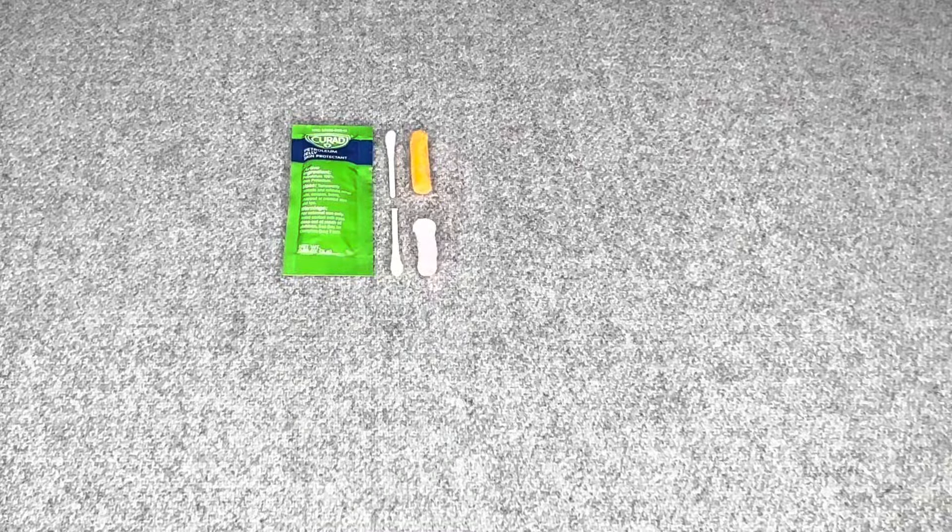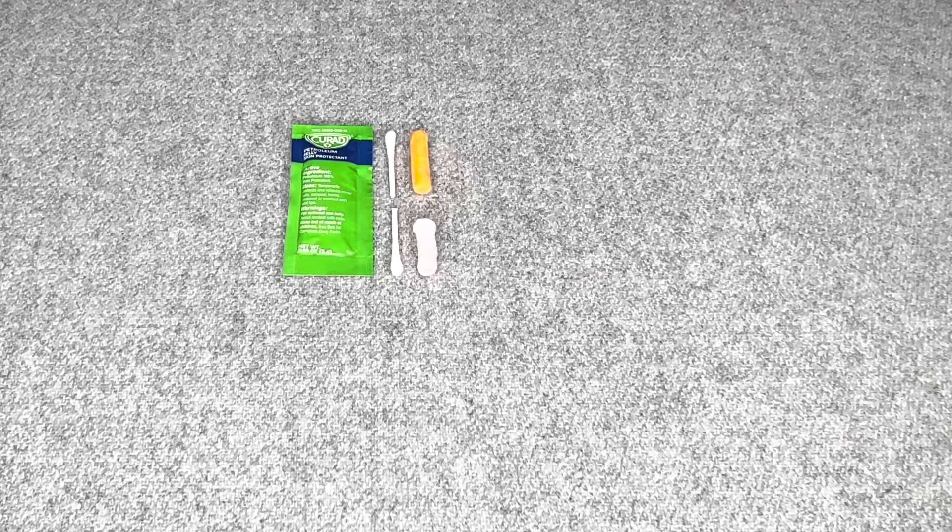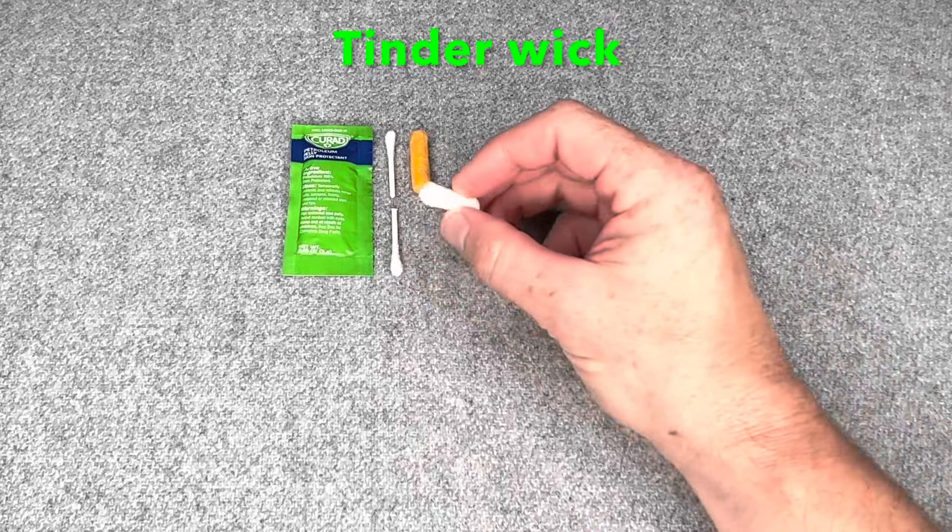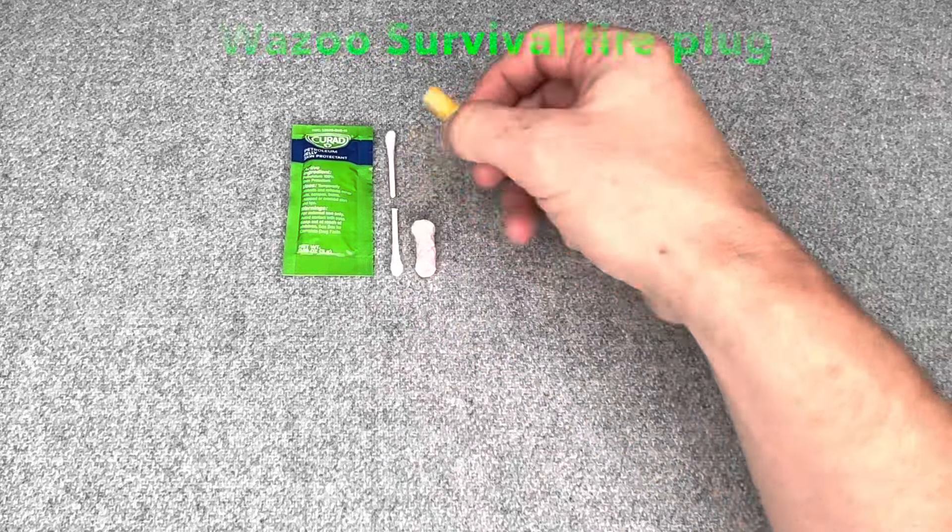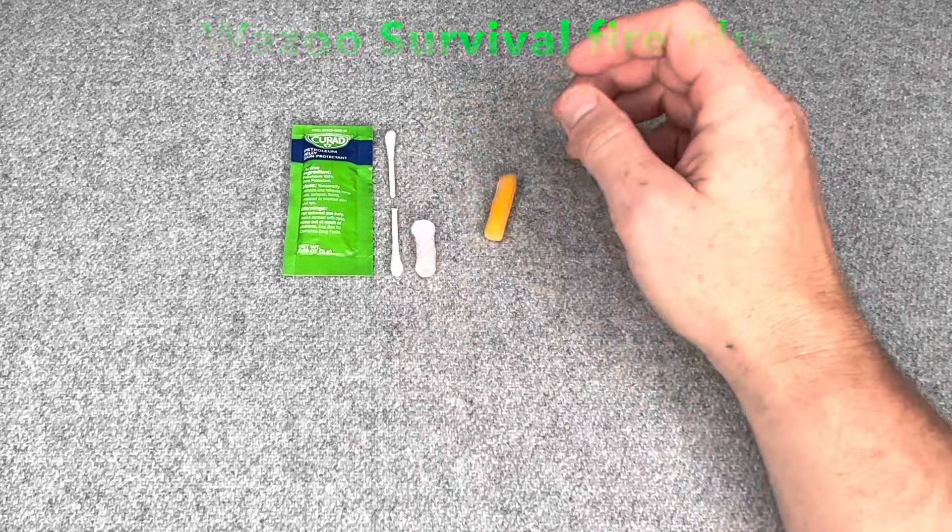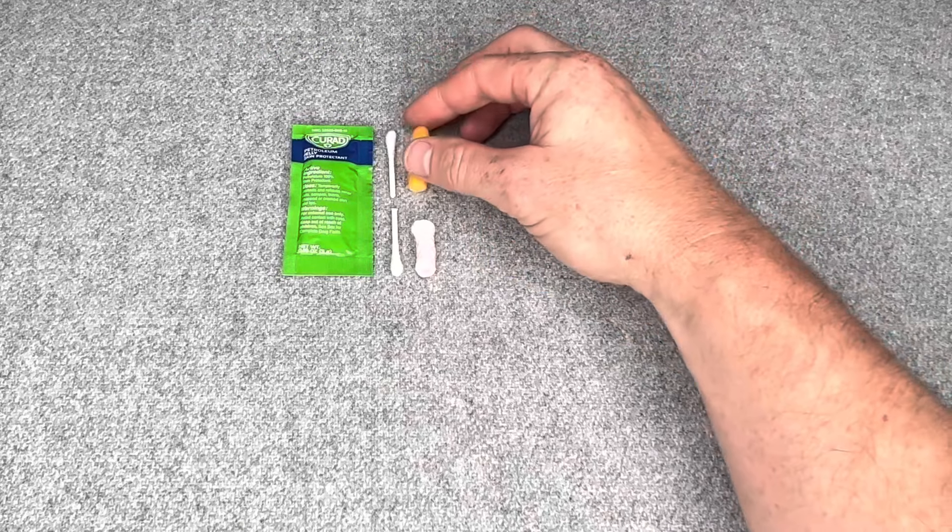Okay, as you can see here on the table, I have several examples of fire tender. This is a tender wick, you can get these on Amazon, they work pretty well. Same as the Wazoo Survival fire plug, same concept. You can cut these up, use them multiple times, start multiple different fires.